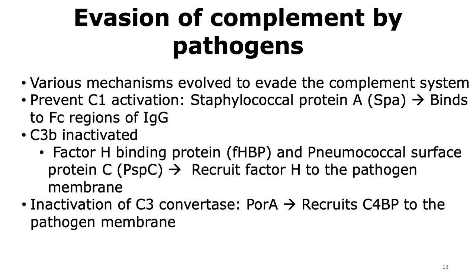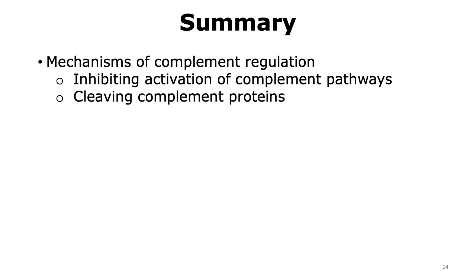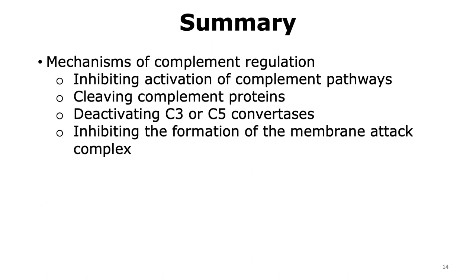With this, we come to the end of our talk where we learned about different mechanisms of regulating complement activity. This involved inhibiting activation of complement pathways or cleaving complement proteins. We also looked at mechanisms that resulted in deactivating the C3 or C5 convertases, or inhibiting the formation of the membrane attack complex. These are the different ways by which host cells are able to protect themselves from complement activation.